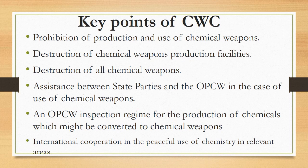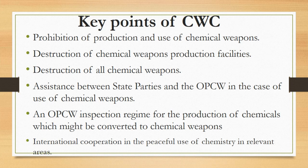The third key point is destruction of all chemical weapons — this convention obligates parties to destroy all already existing chemical weapons. The fourth key point is assistance between state parties and the OPCW in the case of use of chemical weapons. OPCW stands for Organization for the Prohibition of Chemical Weapons. It is an elaborate mechanism to ensure compliance with the convention and also inspects production of chemicals which might be converted to chemical weapons.